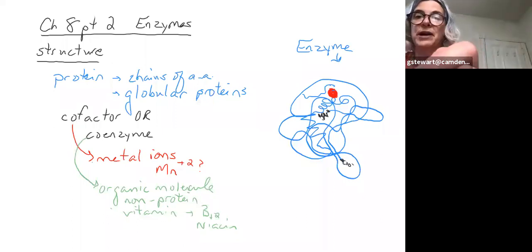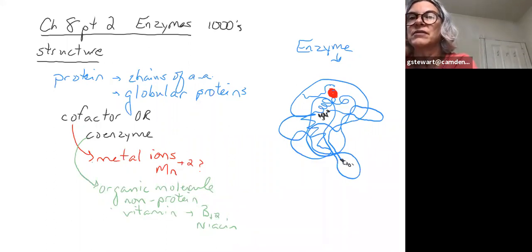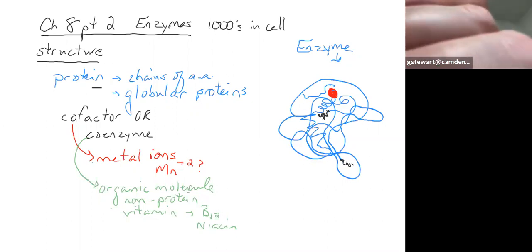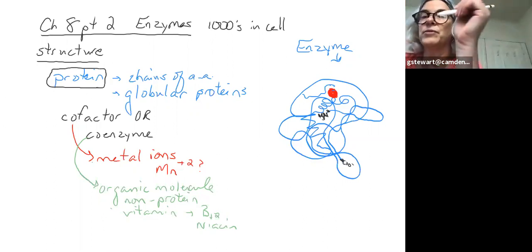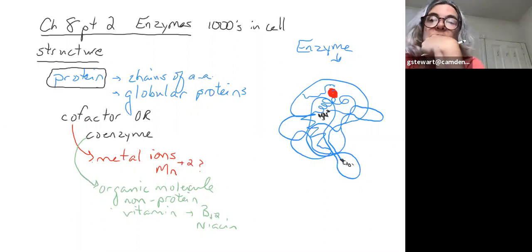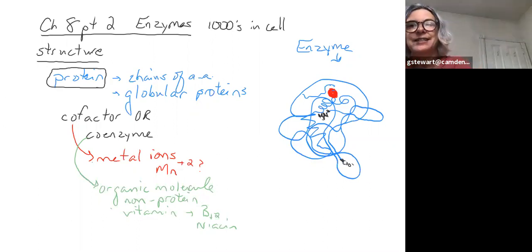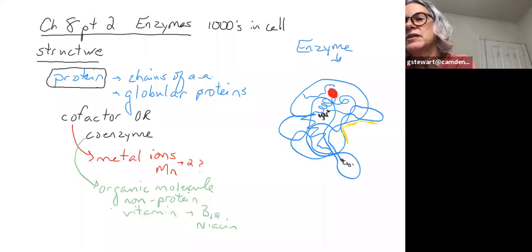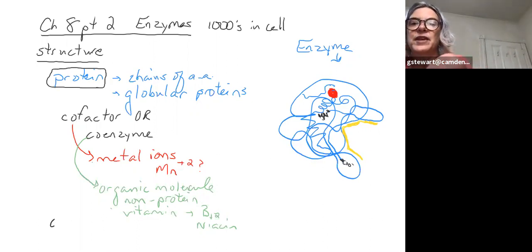There are thousands of enzymes inside cells, and because they're made of protein they're all coded for in the DNA of the cell — in eukaryotic cells, that would be all those chromosomes in the nucleus. One more thing about structure: there is an area of the enzyme — a pocket, groove, or space — called the active site.